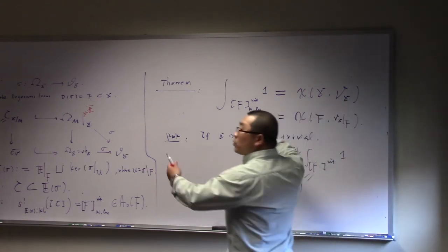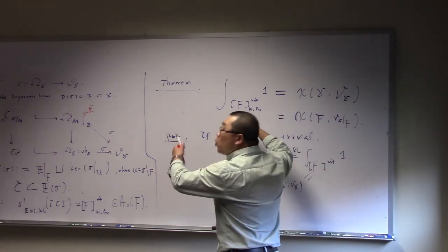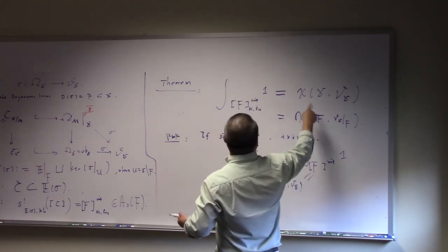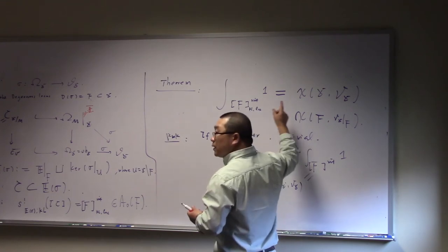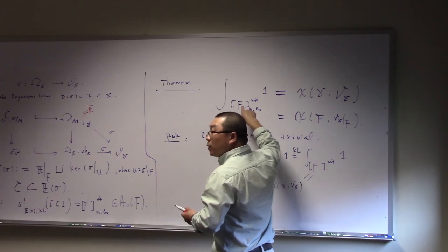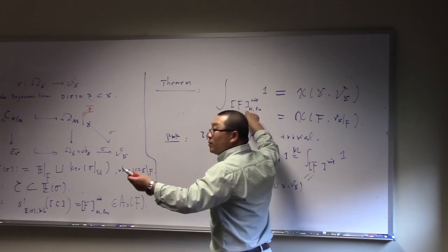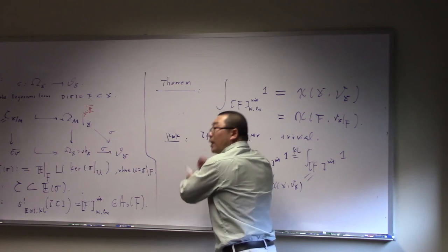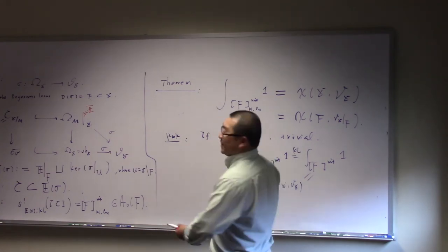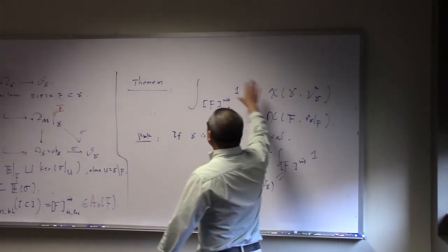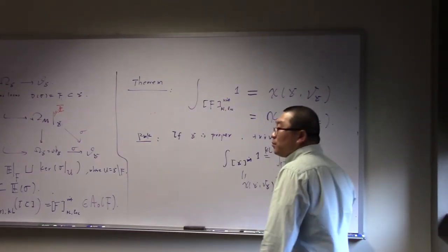That means if the moduli space is non-compact, you can still use this to tackle the Behrend function. Because the Behrend function is difficult to tackle — this one in some sense is easier. Because here you can still use the localization. You know Tom Kim and Lee wrote a paper recently called the localization of cosection localization. You can still use localization on this. But I haven't found the useful part yet. This was the result — it's true.